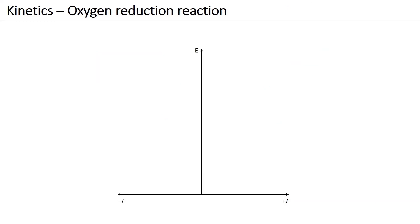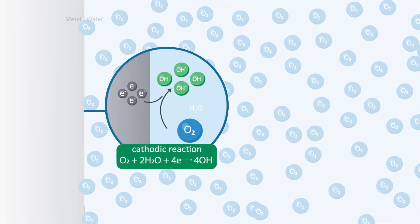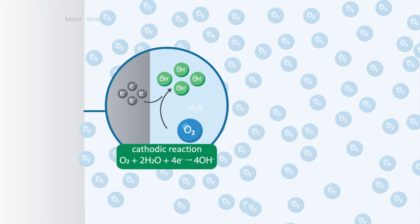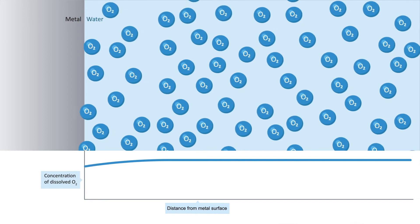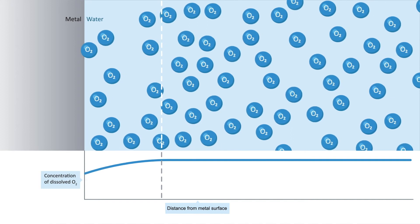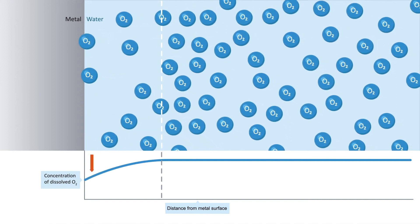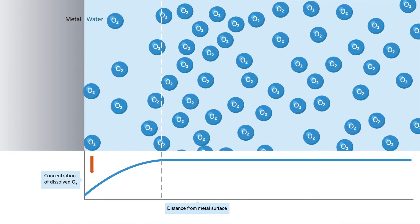Let's take a look at the oxygen reduction reaction and the influence of the oxygen concentration in the electrolyte. Ideally, the polarization curve would look like this. In the schematic animation, we can see how oxygen is consumed in the cathodic reaction. This process decreases the oxygen concentration at the metal surface. As a result, diffusion of oxygen from the bulk electrolyte to the metal occurs. The more we boost the cathodic reaction by polarization, the faster will the oxygen be consumed at the metal. Ultimately, the concentration reaches zero at the metal surface.